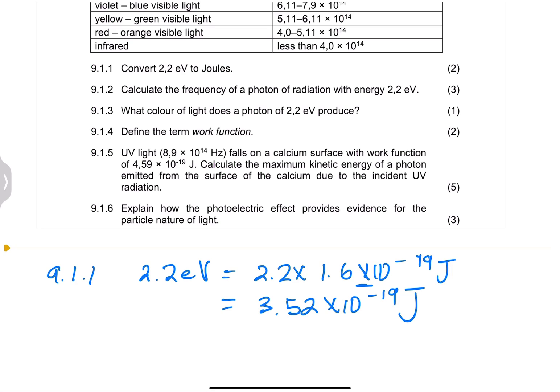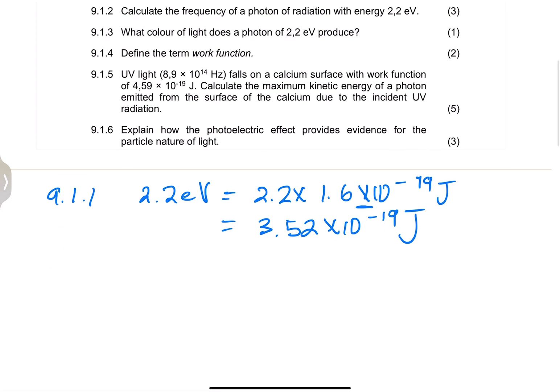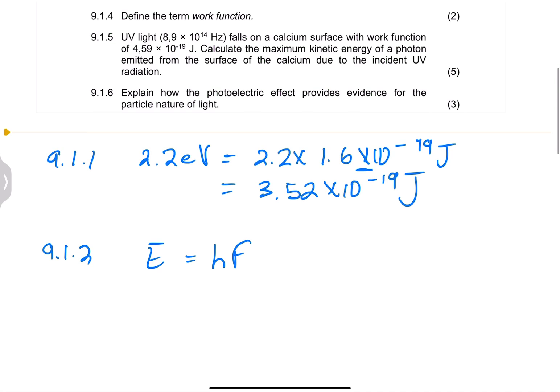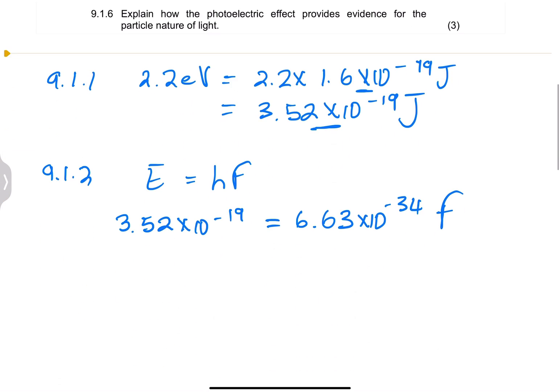The second question says calculate the frequency of a photon of radiation with the energy 2.2 electron volts. We know that E is equal to H multiplied by F, that's Planck's constant. We know the energy that we have is 3.52 times 10 exponent minus 19, and this Planck's constant is given as 6.63 times 10 to the minus 34 multiplied by the frequency. So we're looking for the frequency in that case. All we're simply going to do is divide by 6.63 on both sides.